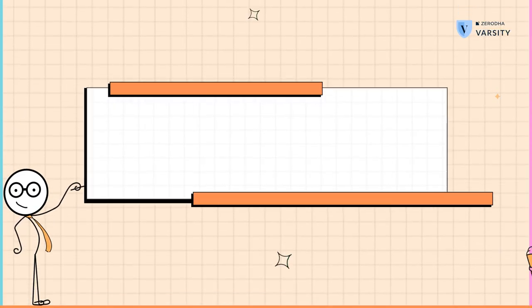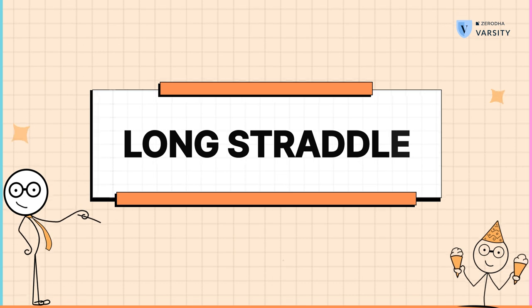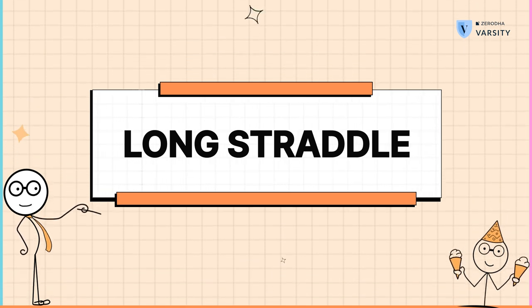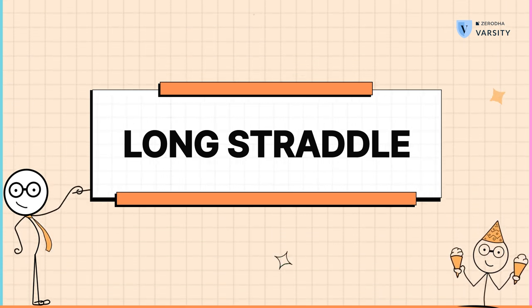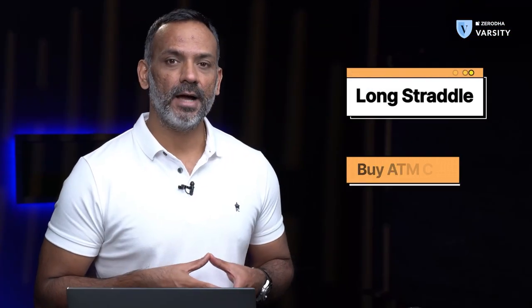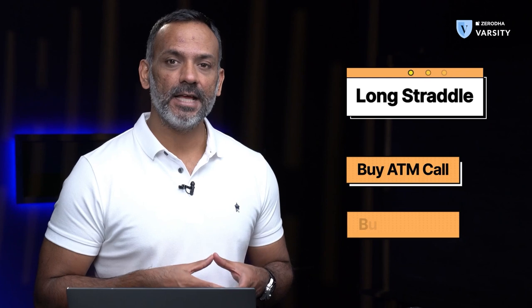Strategies where you set up a trade which is independent of the directional movement are called delta-neutral strategies. The simplest form of a delta-neutral strategy is a long straddle, and we'll discuss the long straddle in this video.